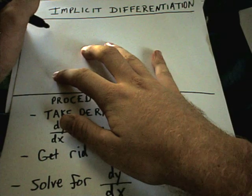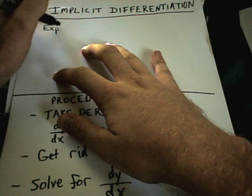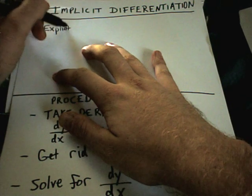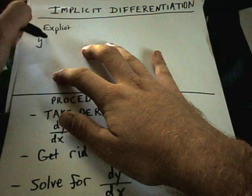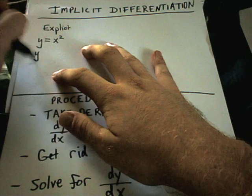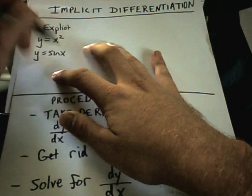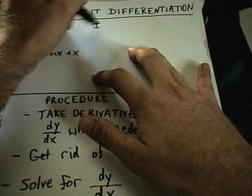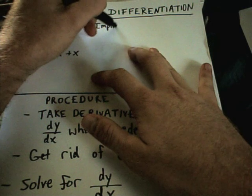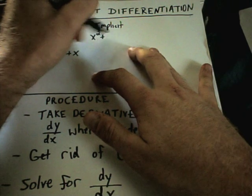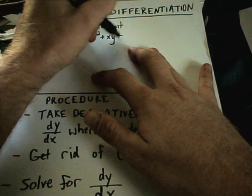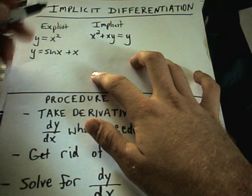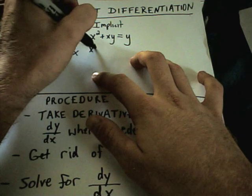First off, an explicit equation is one where you normally have y by itself and x's on the other side. These are two examples of explicit equations. An implicit equation is one where the x's and y's are all mixed up on the same side. You can see we have an x and a y on the same side. That's considered an implicit equation.